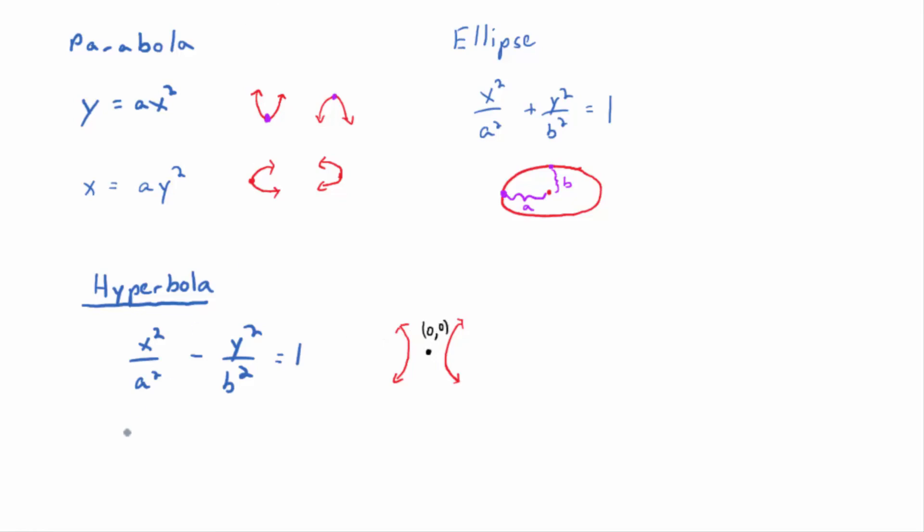And then the other equation, it does look a little bit different. It's going to be y squared over a squared minus x squared over b squared equals 1. And if that's the equation, in other words, if the y squared term is positive, it turns out that it opens up or down. So you have a branch opening up, a branch opening down.